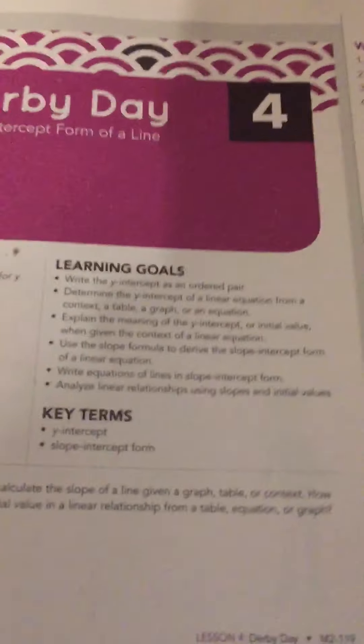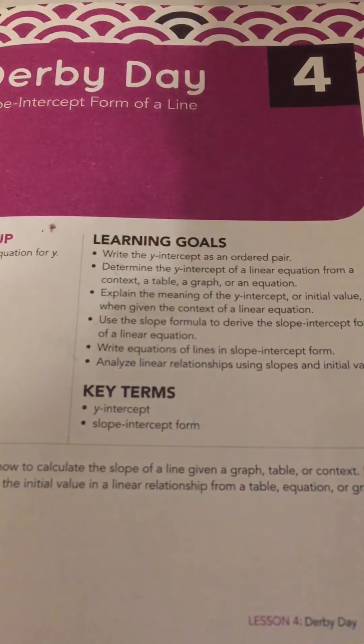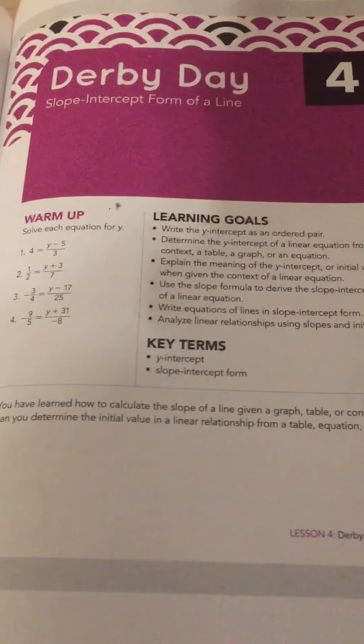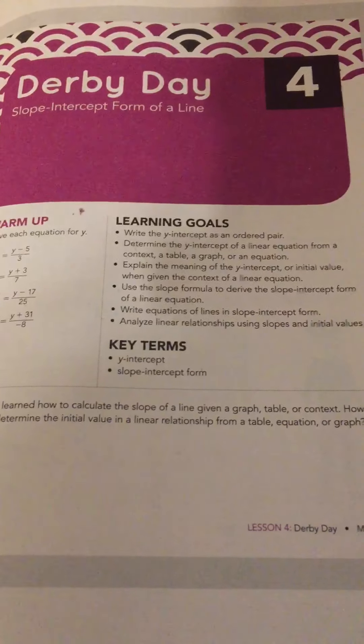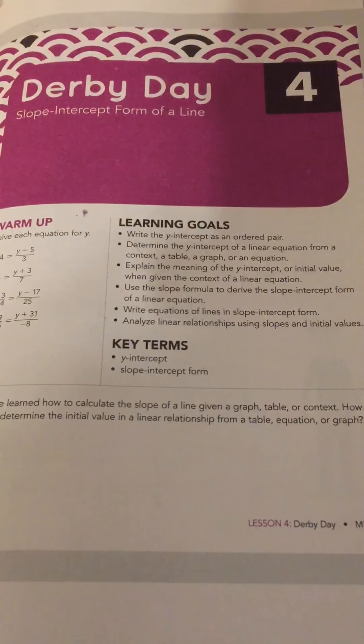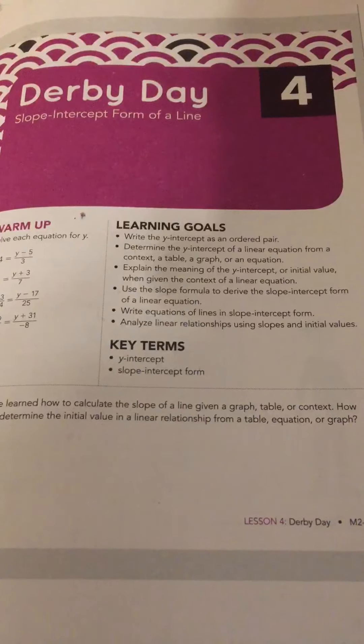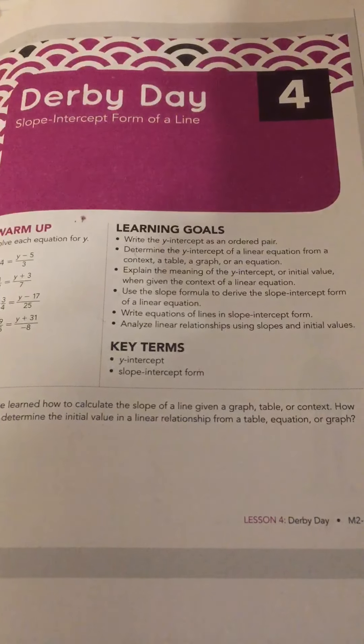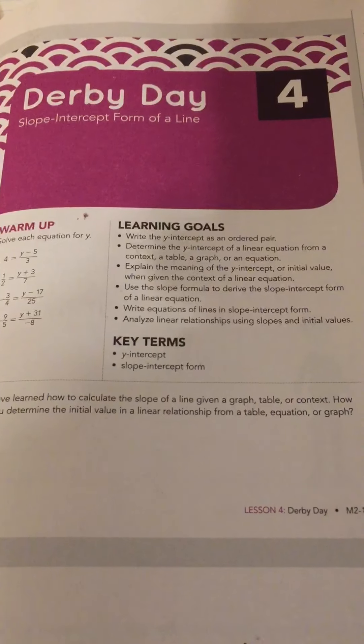So our key terms for today are y-intercept and slope-intercept form and we're all familiar with those. The y-intercept is where the line crosses the y-axis, so it's the value of y when x is 0. And slope-intercept form is our y equals mx plus b format.